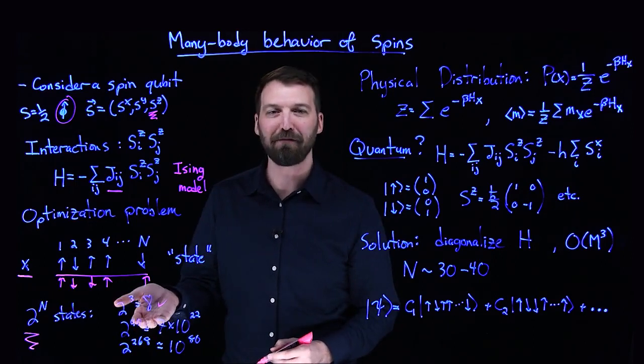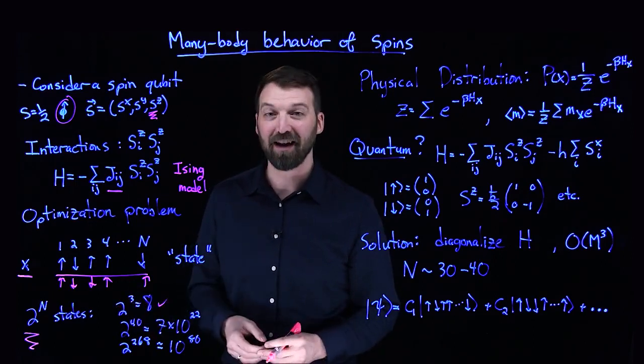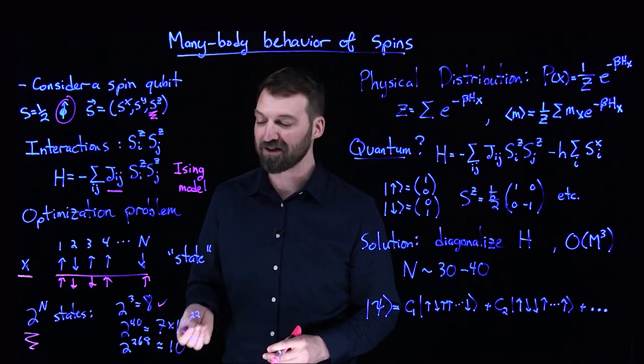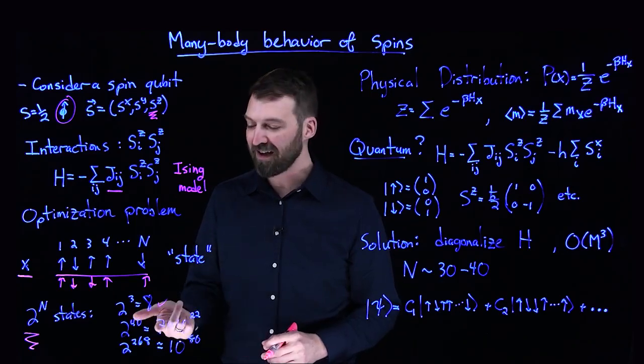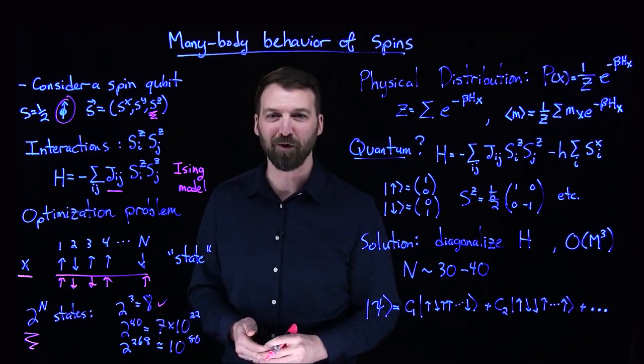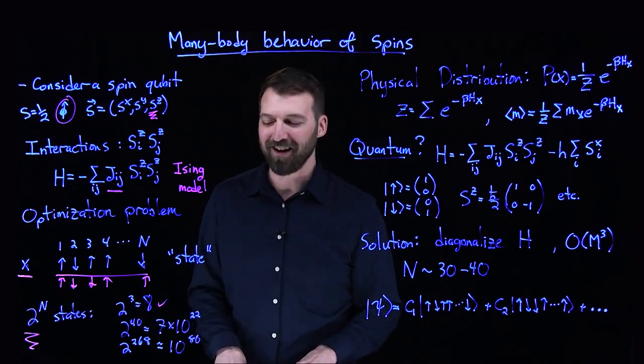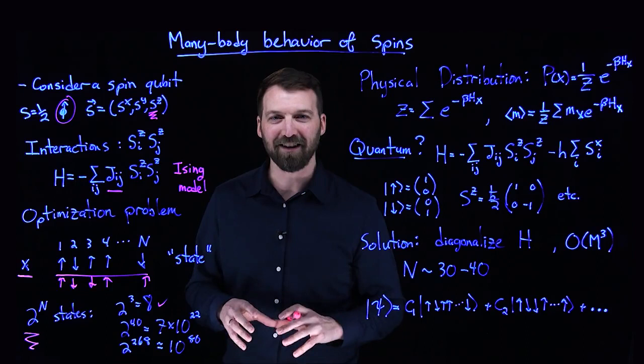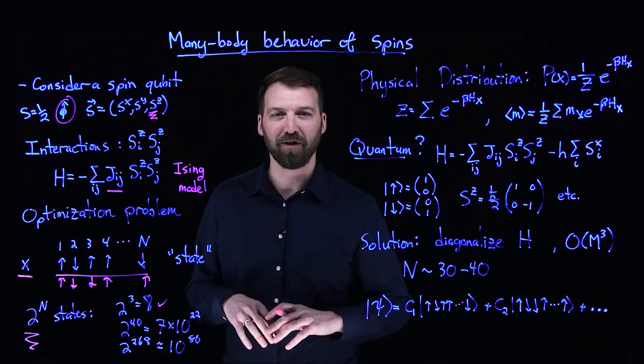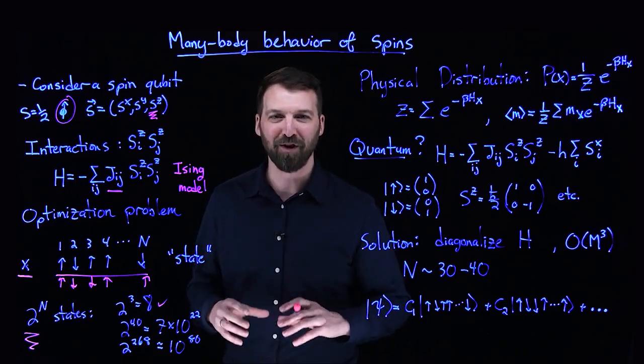If I imagine a system of only 40 interacting SZ components of spin—classical components of spin—I get a number that's 7×10^22. The reason I chose this number is this represents all the data that is currently stored on all of the Earth's computers.